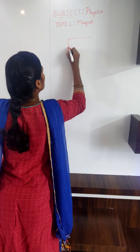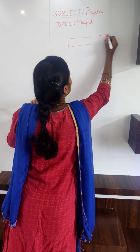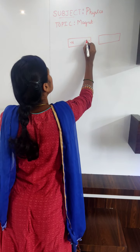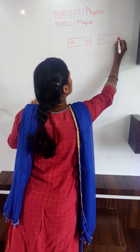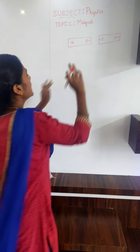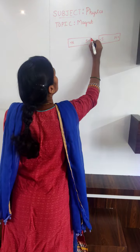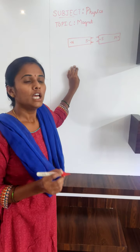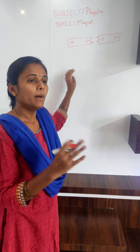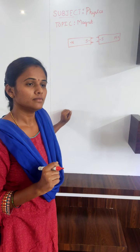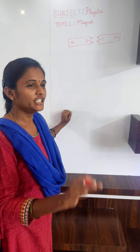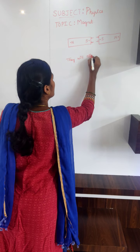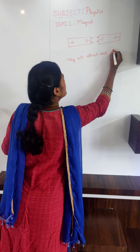Observe here. This is a north pole, this is a south pole, this is a south pole, and this is a north pole. When like poles are brought near, repulsion takes place — they repel each other. Now tell me, when the north pole of one magnet and the south pole of another magnet are brought near, what happens? They will attract each other. Very good — they attract each other.